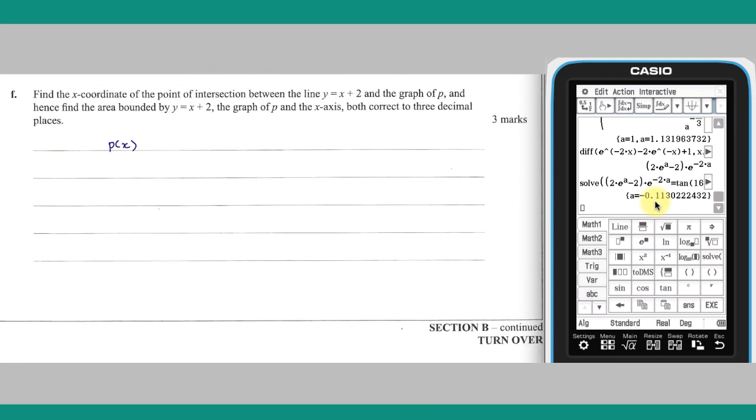Part F. Firstly the intersection of the line Y equals X plus 2 and the graph of P needs to be found.